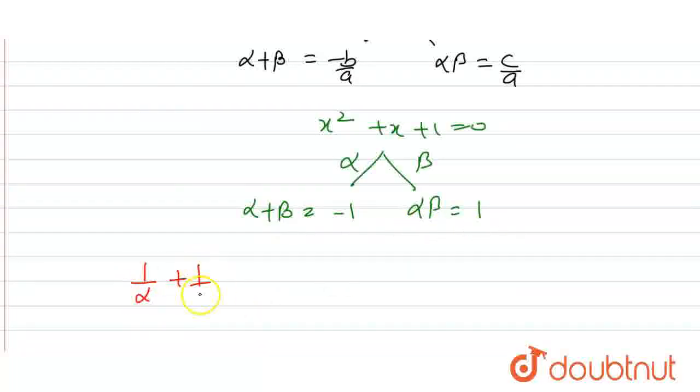I'll put this in equation 1. That is, 1 by alpha plus 1 by beta equals alpha plus beta upon alpha beta. So alpha plus beta I will put as minus 1, and alpha beta I will put as 1. That equals minus 1.